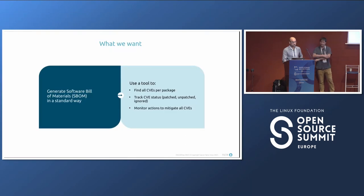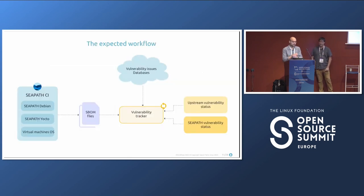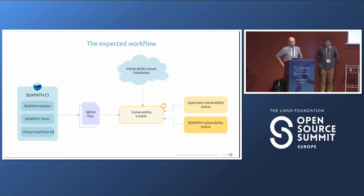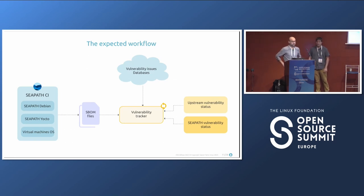We want to use a standard way to do this, and the standard is SBOM — Software Bill of Materials. We want a tool to manage all CVE packages, track them, and ensure we can mitigate vulnerabilities on our system. Our expected workflow: we already have a CI running; we generate an SBOM, then use a vulnerability tracker to check upstream vulnerability status against databases like NVD, and reduce vulnerabilities as much as possible. This workflow will run every day.